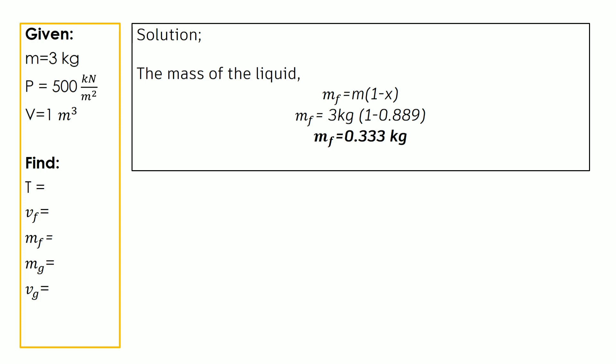In summary, for a cylinder containing three kilograms of water and water vapor mixture in equilibrium: the saturated temperature is 424.95 degrees Kelvin, the specific volume is 0.333 cubic meters per kilogram, the quality x is 0.889, and the mass of the liquid is 0.333 kilograms. That's it for this problem — thank you for watching and see you in the next video.